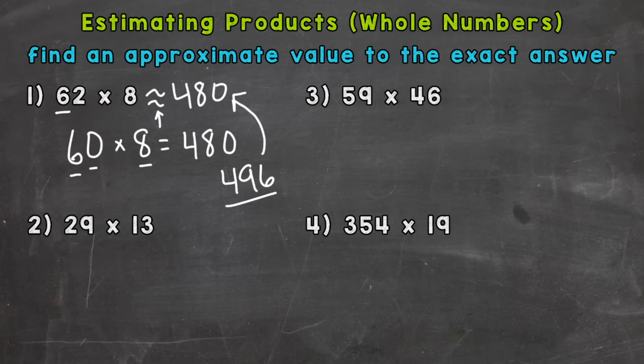So on to number 2, where we have a two-digit number times a two-digit number, 29 times 13. And we're actually going to use a couple of different estimating strategies here, starting with front-end estimation, where we round to the greatest place value digit, the digit furthest to the left.